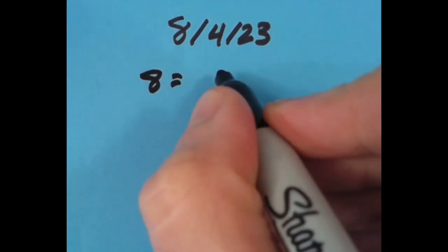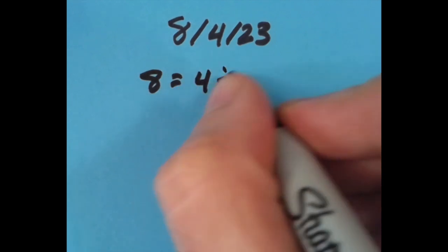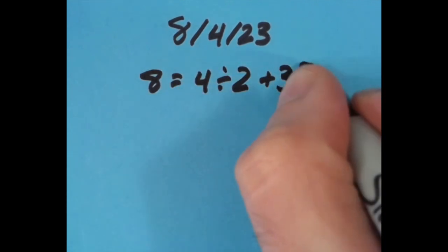What I said was that 8 equals, then I'm going to do 4 divided by 2 to get 2, and to that I'm going to add 3 factorial.